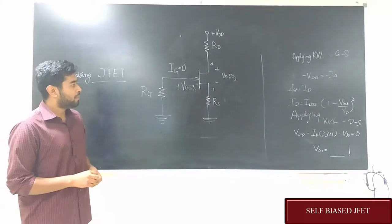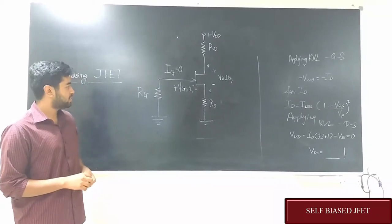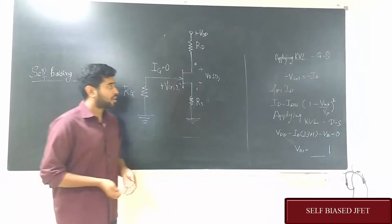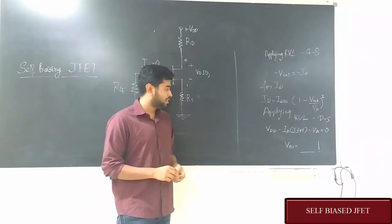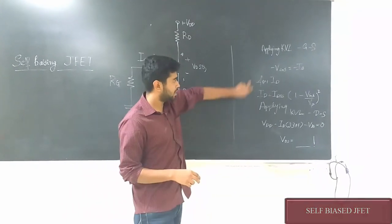The source and gate are grounded through the resistors RS and RG respectively. Now in order to calculate the ID and VDS, these are the equations required.